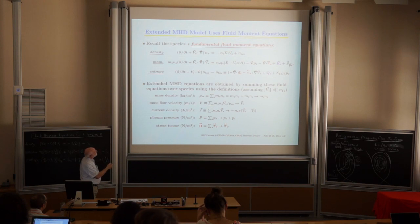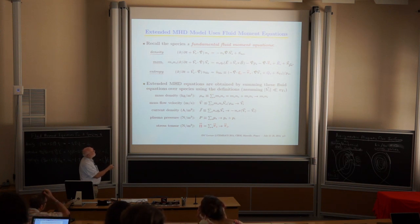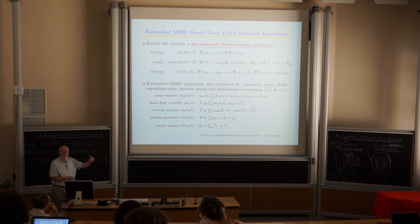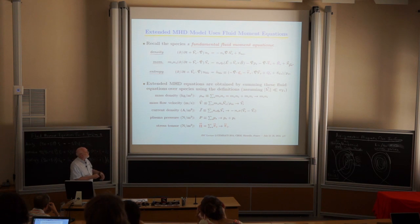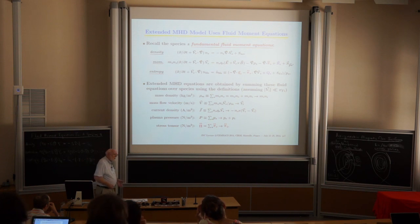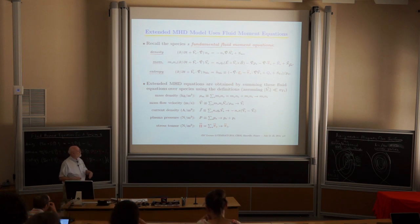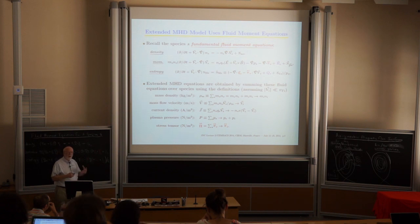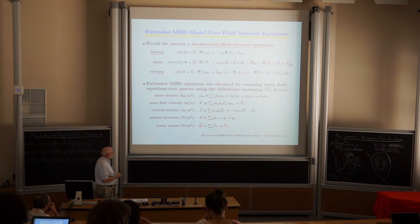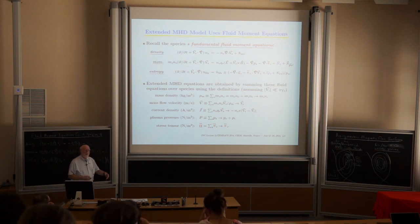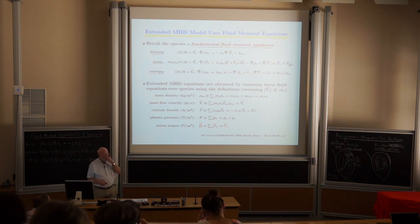You take the density equation and sum over species. Instead of the density of one species, you want the whole mass density. It's mostly the ions, because ions are 3,672 times the electron mass, and the electron density is about equal to the ion density by quasi-neutrality. We define a mass flow velocity — mostly carried by the ions — a current density between electrons and ions, a total plasma pressure, and a total stress tensor.